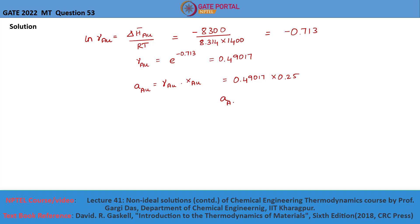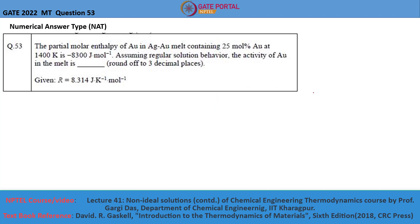Therefore, the activity of gold is equal to 0.122, which is the answer. Rounding up to three decimal places, the answer is 0.122.